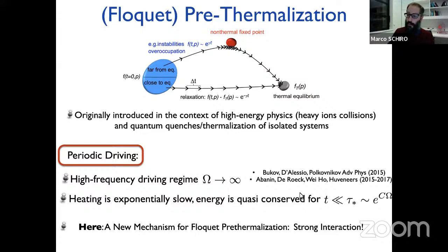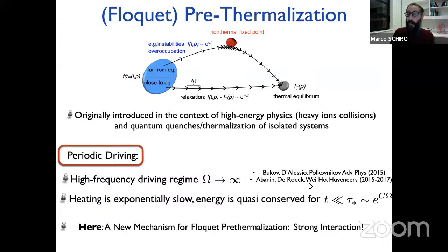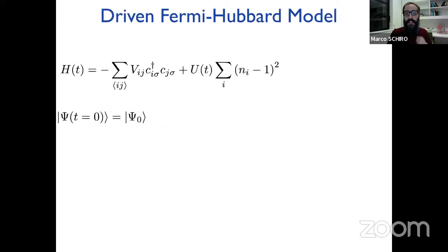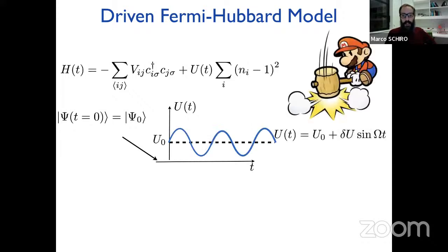What I am going to discuss today is another mechanism for Floquet pre-thermalization that I think is much more interesting, because it does not require high frequency but can happen even with resonant drive, provided that interactions are very strong. With that said, let me go back to our Hubbard model with optically modulated interaction and describe our results.